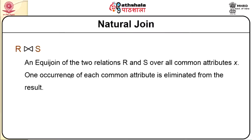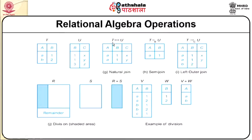The second join is natural join, which happens between two relations R and S. A natural join is an equi join over all common attributes X, where one occurrence of each common attribute is eliminated from the result — so there are no duplicates. For example, with relations T (attributes A, B) and U (attributes B, C), B is common between them. Where B equals 1 appears in both, it maps to A1-x and A1-y as the resultant of the natural join between T and U.